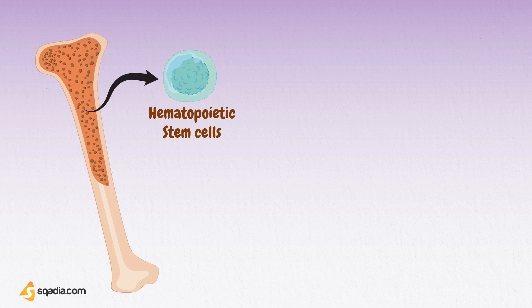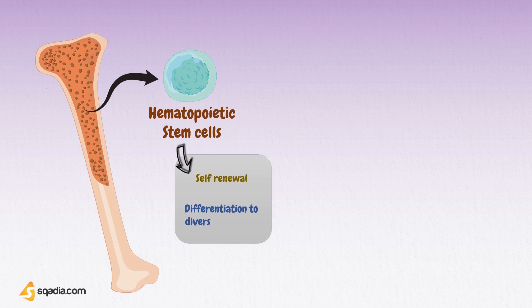These stem cells are defined by two capacities: first, the ability to regenerate, or self-renewal; and second, the ability to differentiate into diverse cell types.